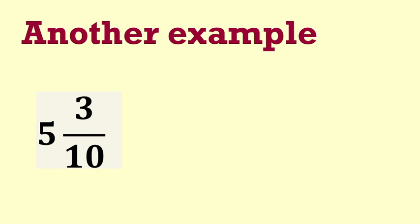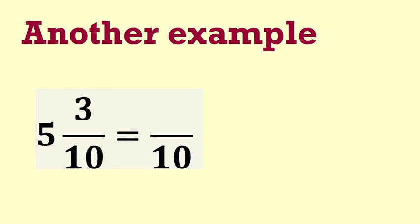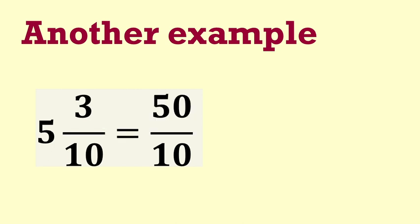Here is another example, 5 and 3 tenths. We will be expressing this as tenths. 5 times 10 makes 50 tenths, plus the 3 tenths equals 53 tenths.